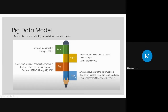A bag is a collection of tuples of potentially varying structure that can contain duplicates also. Then there is map. We also use maps in Python. It is an associative array which works in a key-value pair, where you are storing your data in key-value pairs. The key must be a character array, and value could be any type of data — integer, float, anything. The data will be stored in a key-value pair.